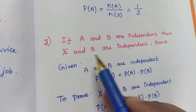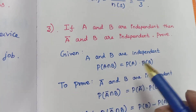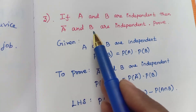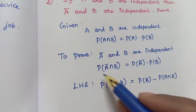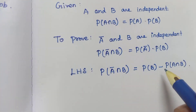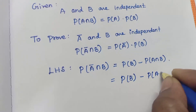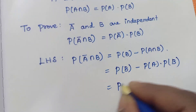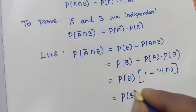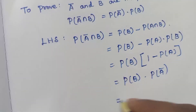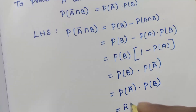Third sum: if A and B are independent, prove that A-bar and B are also independent. A and B independent means P(A intersection B) = P(A) × P(B). We need to prove P(A-bar intersection B) = P(A-bar) × P(B). Consider the left-hand side: P(A-bar intersection B) = P(B) minus P(A intersection B) = P(B) minus P(A)×P(B) = P(B)[1 minus P(A)] = P(B) × P(A-bar), which is the right-hand side. Hence proved.